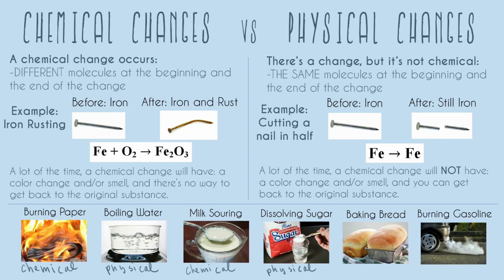Any sort of dissolving is always going to be a physical change. People get confused because it seems like sugar water is pretty different from just two separate things. But what we're actually doing when we dissolve is not a chemical change — we're not taking sugar and water and turning them into a third molecule. We're just separating out the molecules.